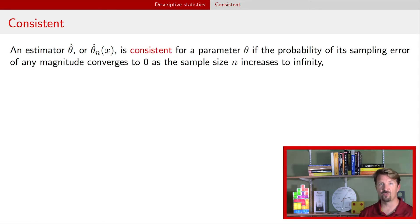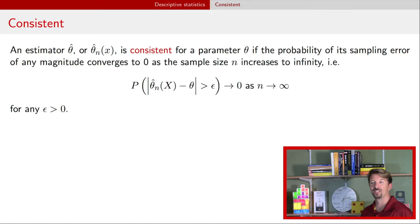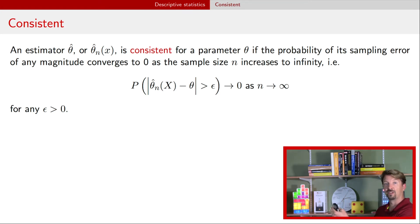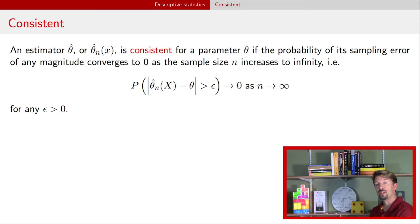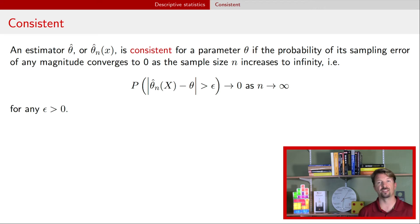If an estimator is consistent for a population parameter theta, the probability of its sampling error of any magnitude converges to zero as the sample size n increases to infinity. Written mathematically: the probability that the absolute value of the estimator minus the true population parameter is greater than epsilon — that E-looking symbol — goes to zero as the sample size n goes to infinity. This has to be true for any epsilon greater than zero. So the probability of being too far away from the true value goes down as the sample size goes to infinity.